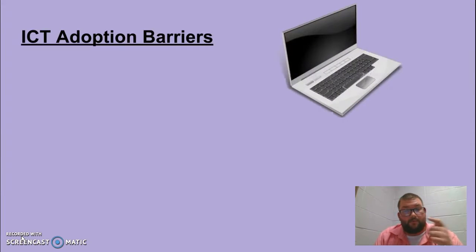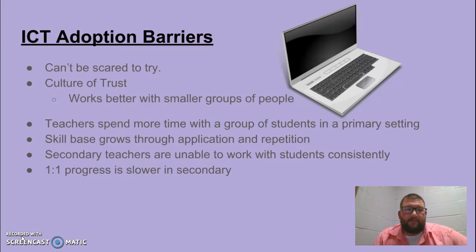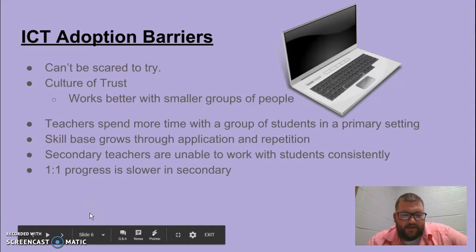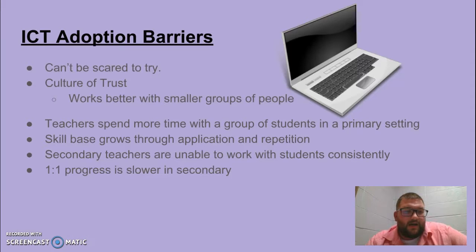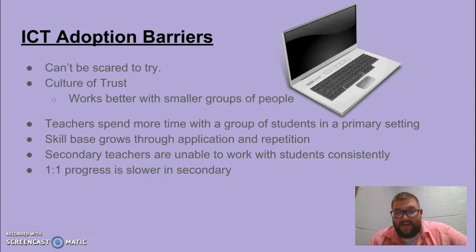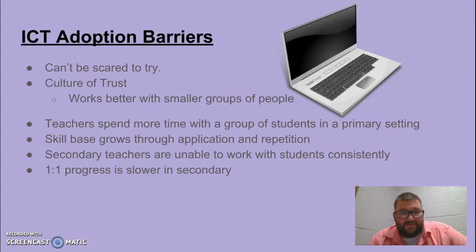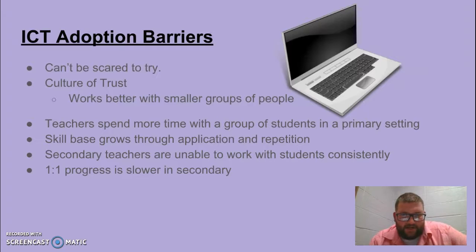Another thing I went over was watching the YouTube video on ICT adoption barriers. It talked mainly about how it's easier to implement in a primary school than it is a secondary school. As educators, they cannot be too scared to try new things when you build a culture of trust and work in smaller groups — primary is perfect for this because they work with kids on a daily basis. In high school, we only get a limited amount of time; in block scheduling, about an hour and a half. We're not able to go over a lot of the applications or repeat expectations. One-to-one progress slows down more in secondary because you just can't work with them consistently — especially in block scheduling, it's every other day.